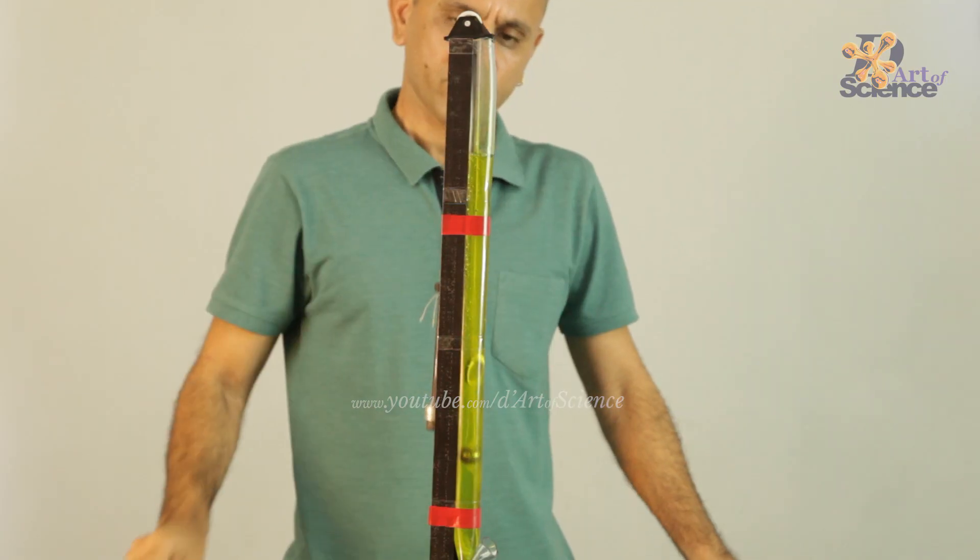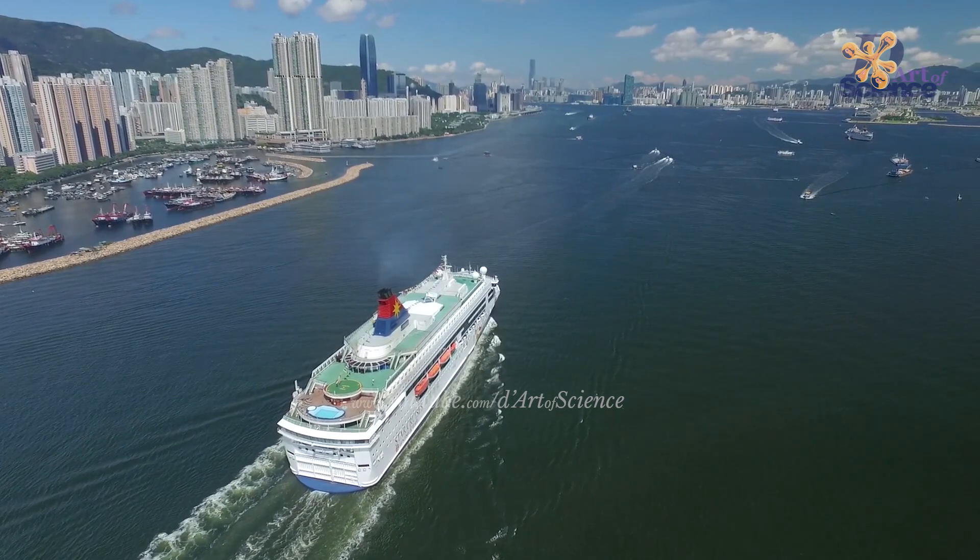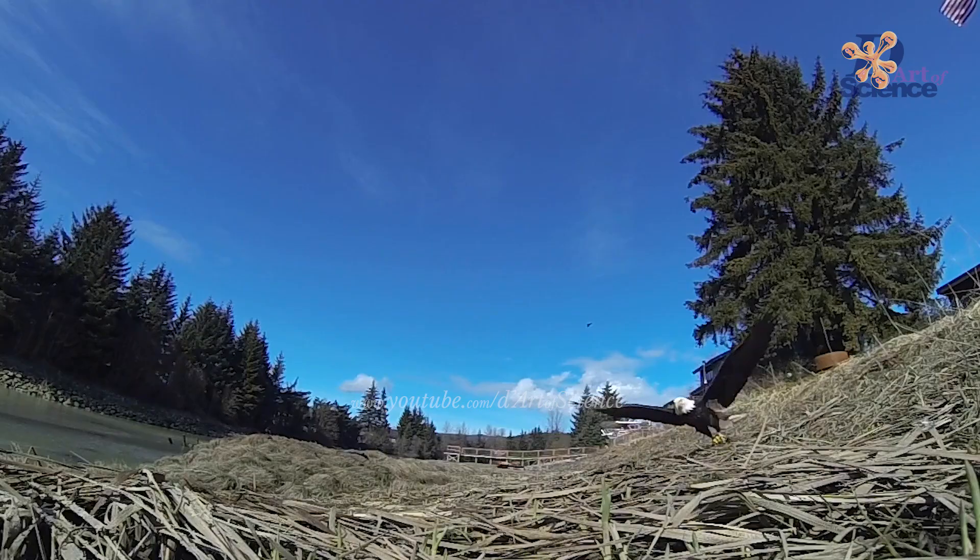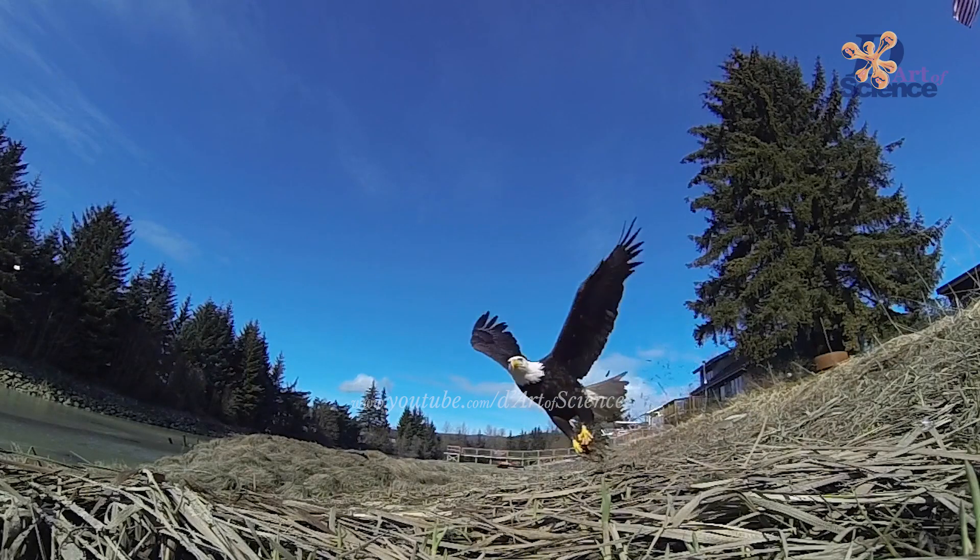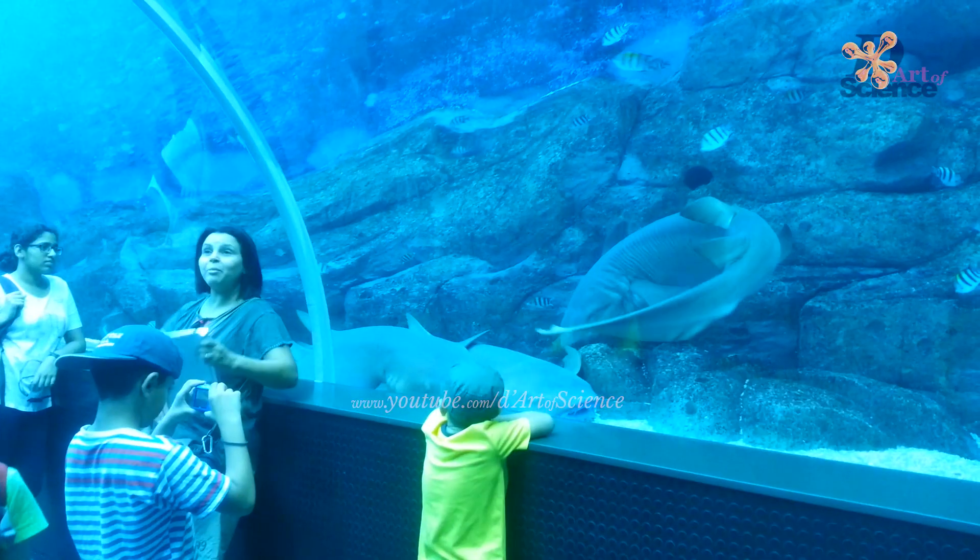The frictional force also depends on the nature of the fluid, its density or viscosity. Fluid friction depends on the size of the object. In nature, most animals like birds and fish have evolved over time to be designed to offer minimum friction.